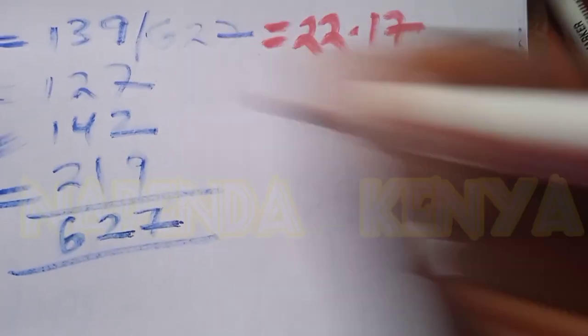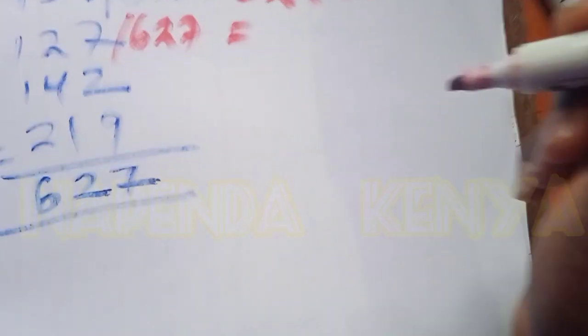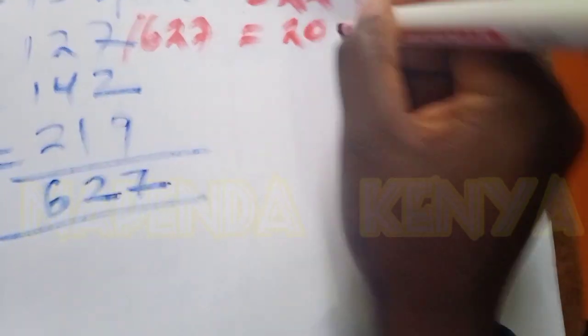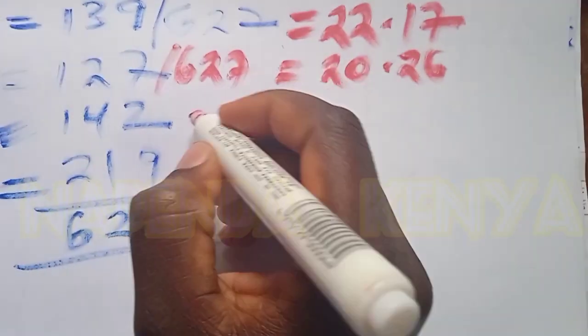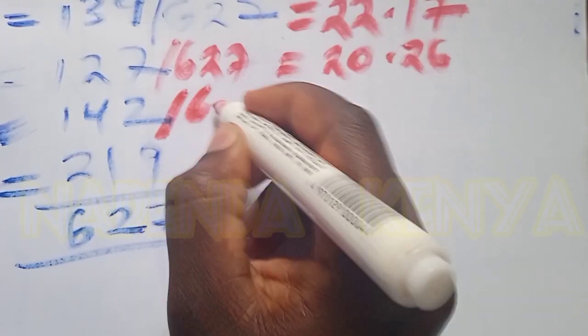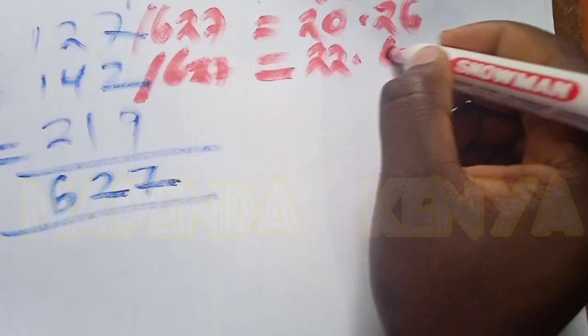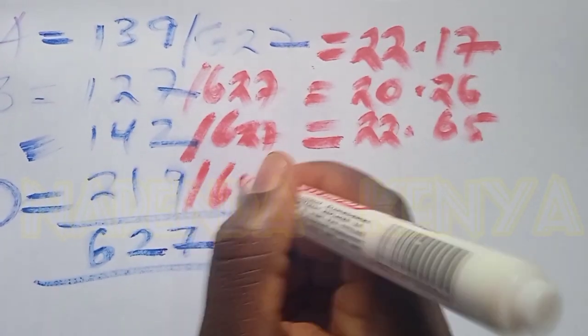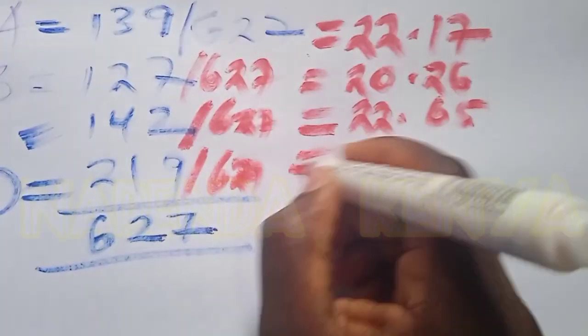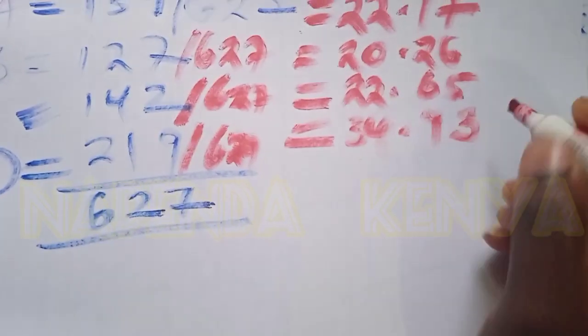127 out of 627 is going to give us 20.26%. 142 out of 627 is going to give us 22.65%. Then 219 out of 627 will give us 34.93%.